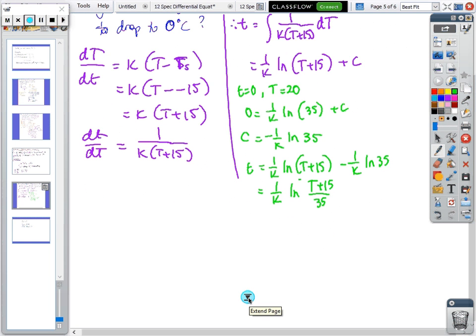We use the other information: 18 minutes and 8 degrees. So 18 equals (1/k) ln(23/35), so 1/k equals 18 divided by ln(23/35), so k equals the opposite.